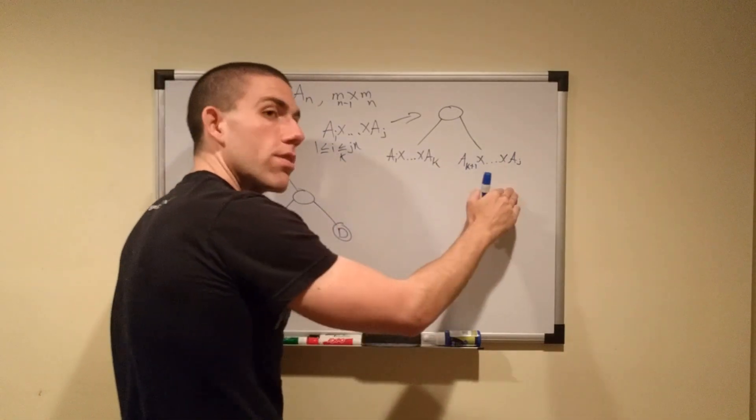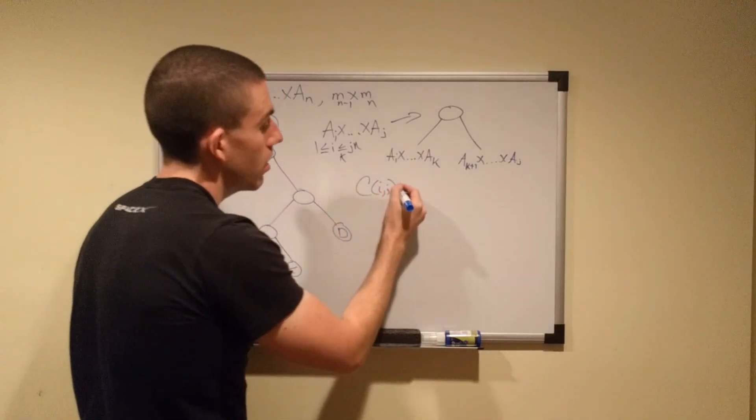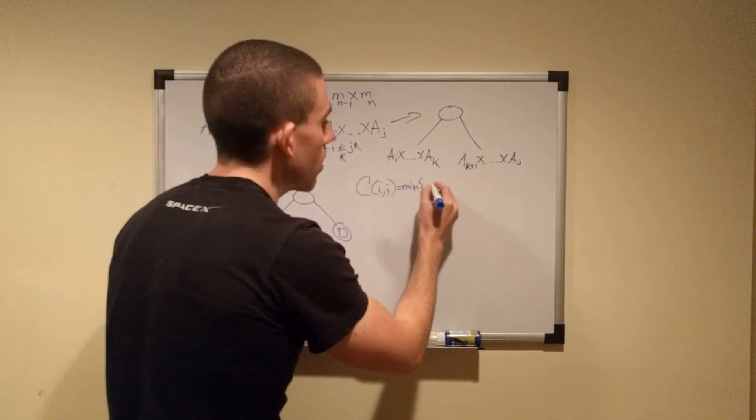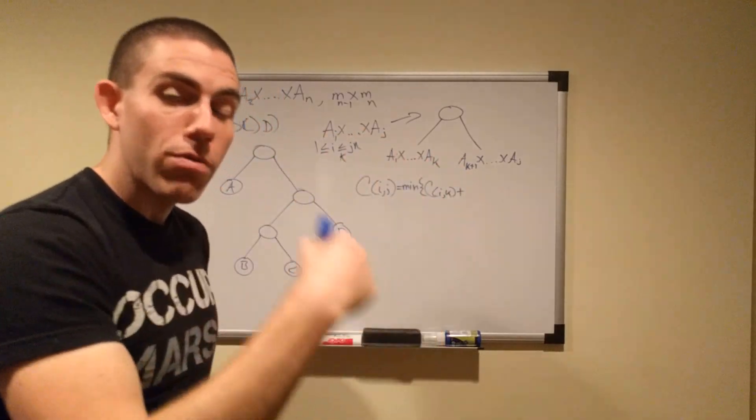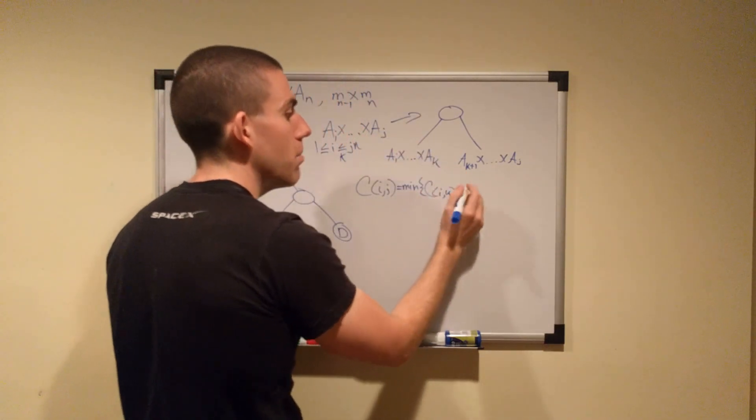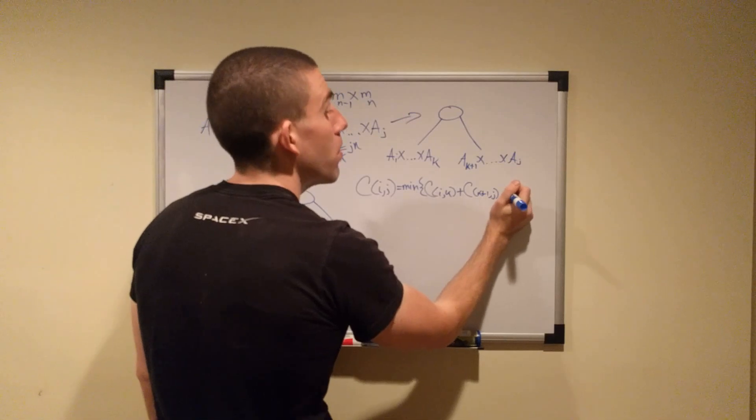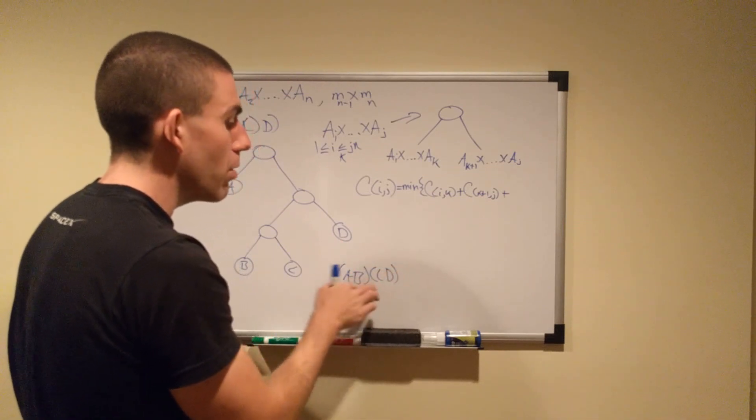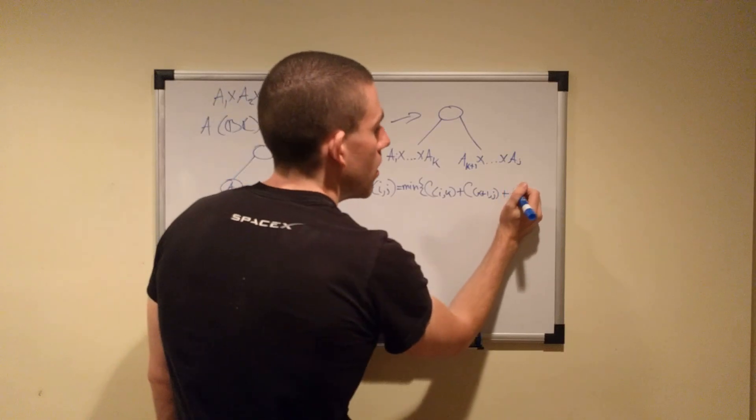So then we can write the total cost of computing a sub-tree as, say, cost of multiplying i through j, being equal to the minimum cost of, and it's a recursive function, cost i through k, plus, and this is reminiscent of what we were doing before in the example with the matrices in the beginning. We start with i through k, multiply them together, plus the cost of k plus 1 through j, plus, remember the last step in the second example, the A, B, C, D, we multiply these together, multiply these together, and then we added the cost of multiplying them together, plus the cost of combining them. Right?